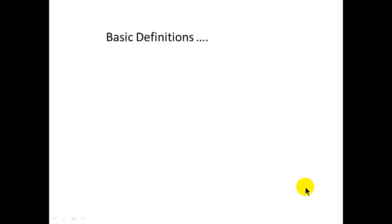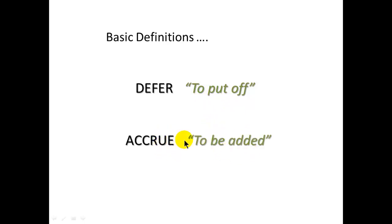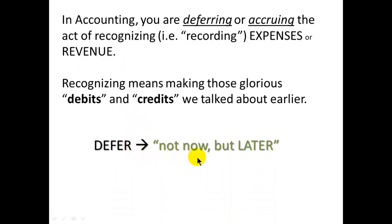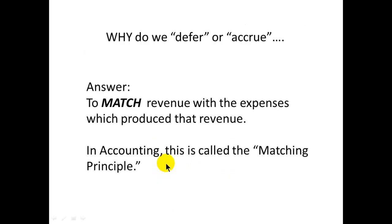Let's get into the mechanics of deferrals and accruals. Some basic definitions: to defer means to put off, to procrastinate — we'll put off the recognition of that expense or revenue. To accrue means to be added; you're going to recognize the revenue or expense now. In accounting, you are accruing or deferring the act of recognizing — and recognizing really just means recording, making that debit or credit. Defer means not now but later; accrue means do it now.